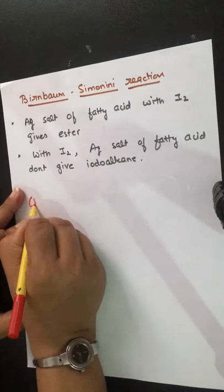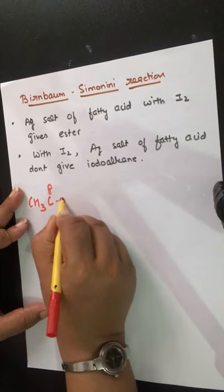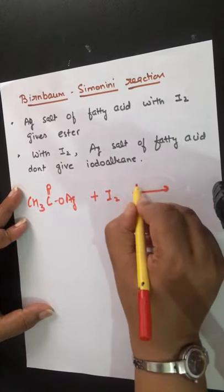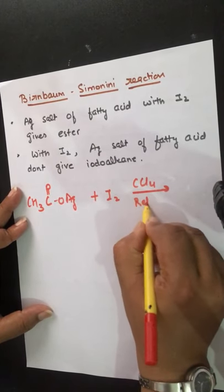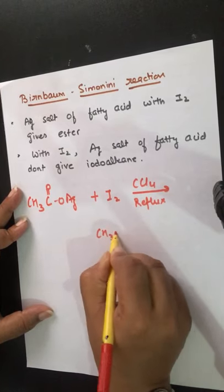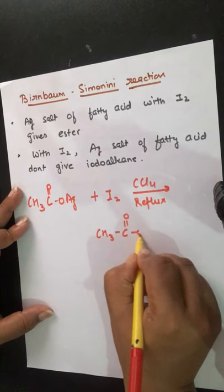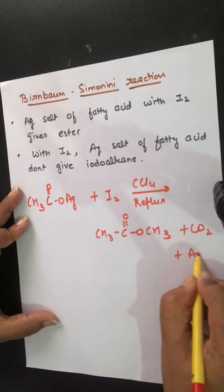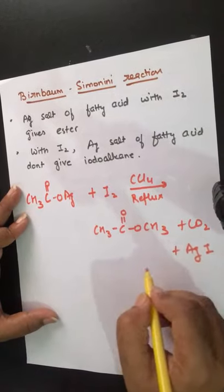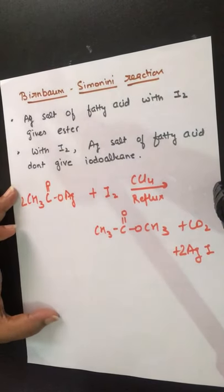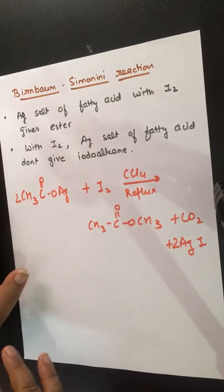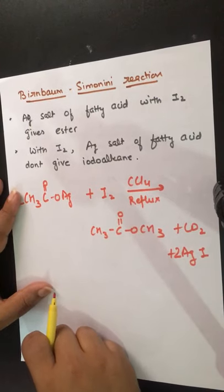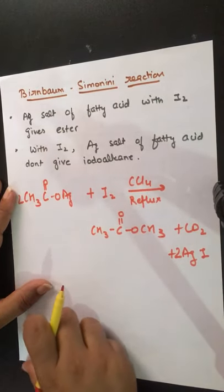Silver salt of fatty acid — CH₃COOAg — when reacted with iodine in the presence of CCl₄ by reflux, it gives out CH₃COOCH₃, which means an ester, with the evolution of CO₂ and AgI. In this reaction, what we find out is an ester. Ester formation with iodine — this is known as the Bint-Bond-Simonini reaction.